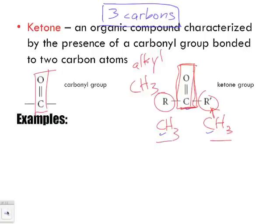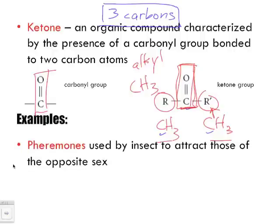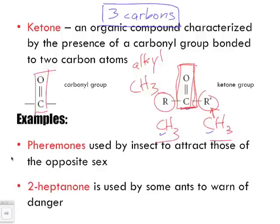Let's look at a couple of examples of ketones. Typical pheromones that insects use to attract those of the opposite sex are typical ketones. 2-heptanone is used by some ants to actually warn of danger. Notice how these aldehydes and ketones all have distinct odors. However, with some of these odors, they are very species-specific — an insect attracting another insect is going to attract another insect of the same species.